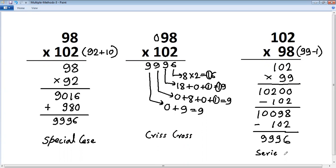So we will use three different basic methods to solve 98 multiplied by 102. See you next time. Thank you.